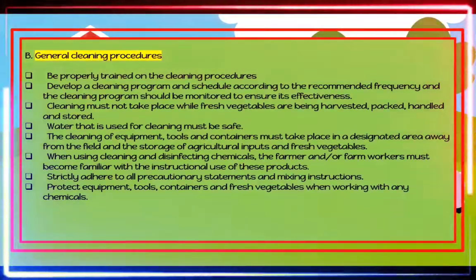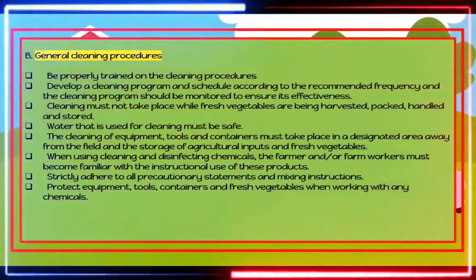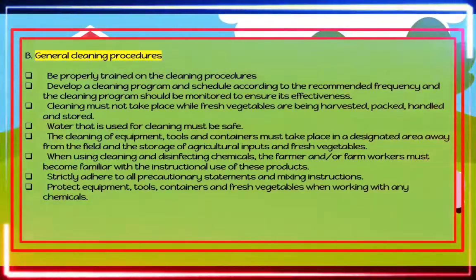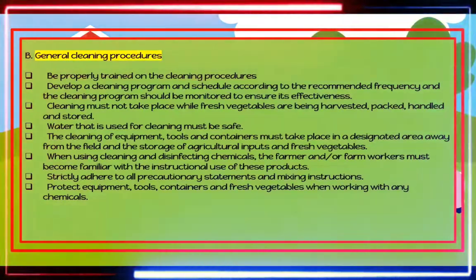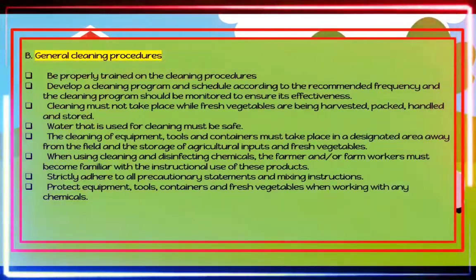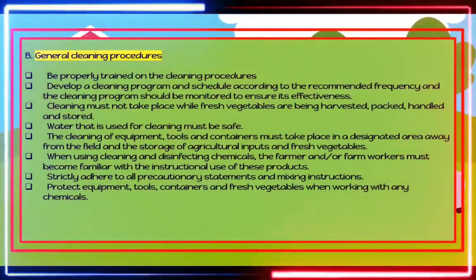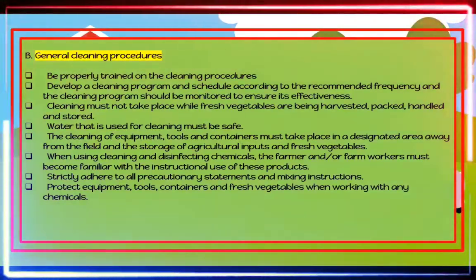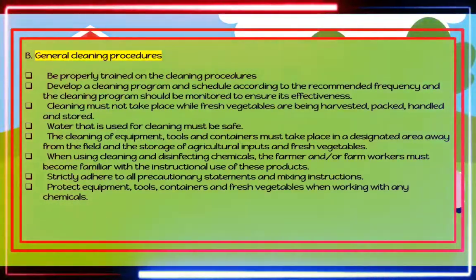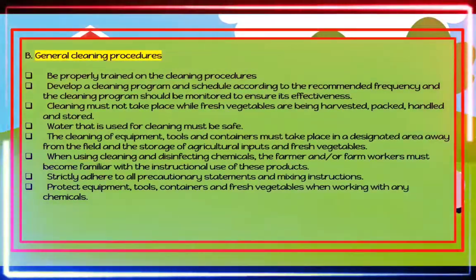Fifth, cleaning of equipment, tools, and containers must take place in a designated area away from the field and the storage of agricultural inputs and fresh vegetables. Sixth, when using cleaning and disinfecting chemicals, the farmer and/or farm workers must become familiar with the instructional use of the product. Seventh, strictly adhere to all precautionary statements and mixing instructions. Eighth, protect equipment, tools, containers, and fresh vegetables when working with any chemicals.